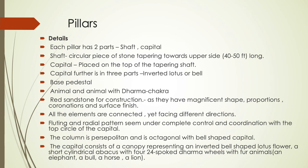Each pillar has two parts: shaft and capital. The shaft is a circular piece of stone tapering towards the upper side, and the capital is placed on top of the tapering shaft. On the top of the pillars there are many animal reliefs made for religious purposes. The pillars are made of red sandstone. On the top of the pillars, there are many dharma wheels and other symbols.